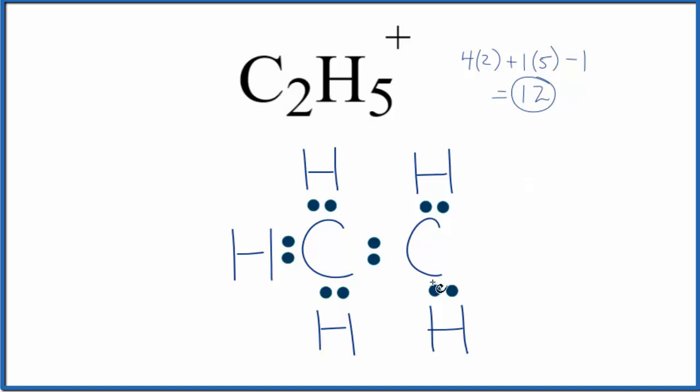At this point, there's really not much we can do. We don't have any more valence electrons to use. So this is going to be the Lewis structure for C2H5+. If you calculated the formal charges, everything would be 0 except this carbon here. That would be +1.